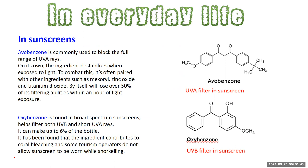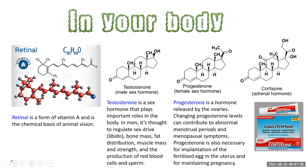Avobenzone on its own destabilizes when exposed to light, meaning its UVA-blocking effect doesn't last long, so it's often paired with other compounds. Oxybenzone is found in broad-spectrum sunscreens and helps filter UVB and shorter UVA rays, making up to 6% of a bottle of sunscreen. However, it has been found to contribute to coral bleaching — in some snorkeling areas on coral reefs, you may actually be asked not to wear sunscreen to protect the coral.